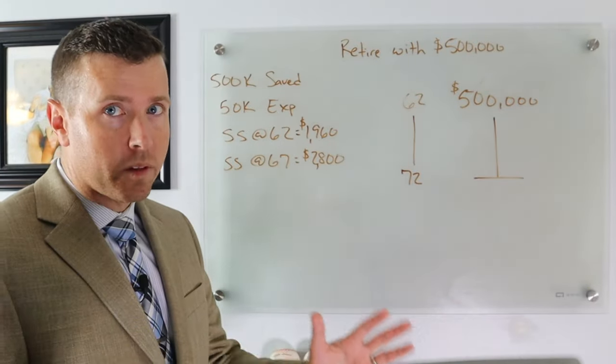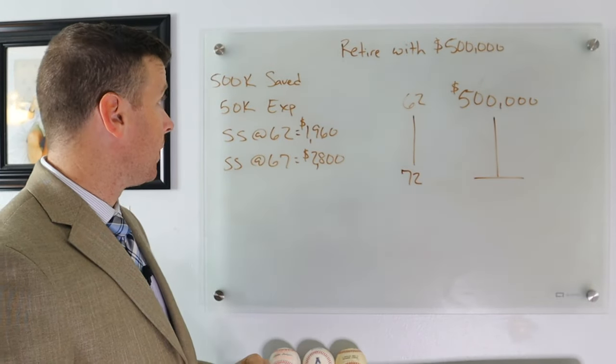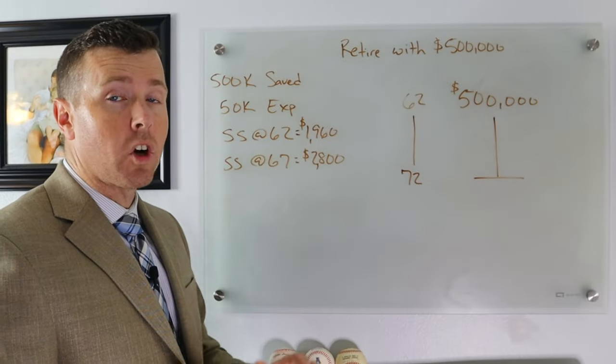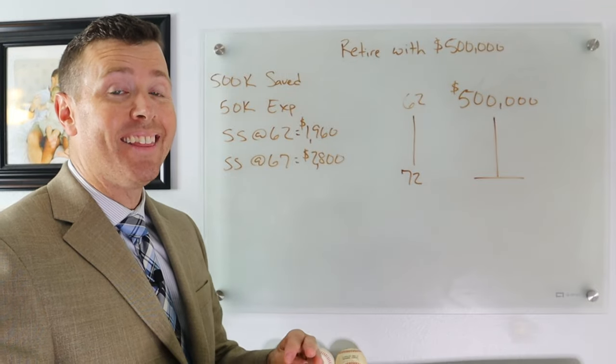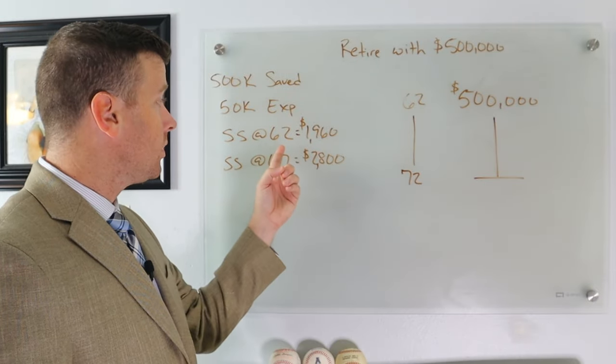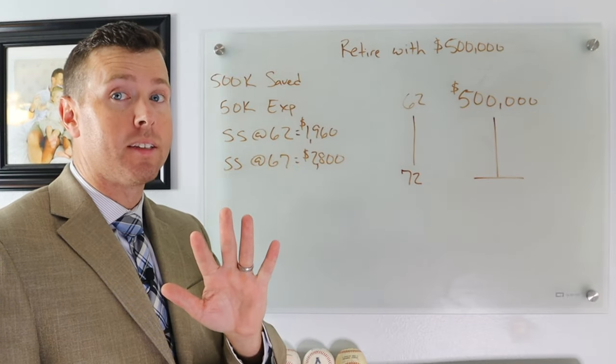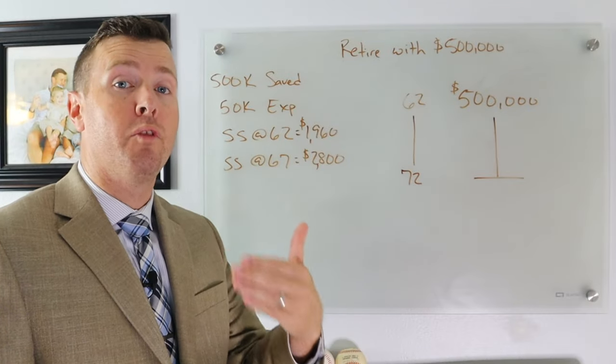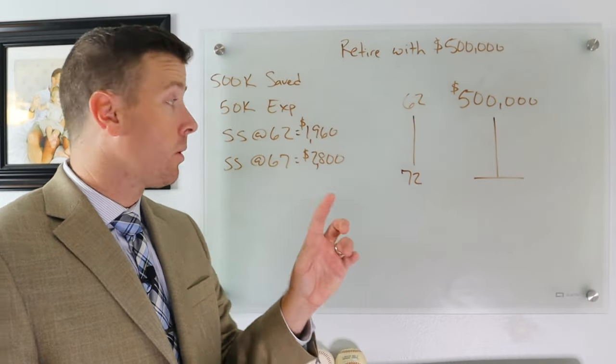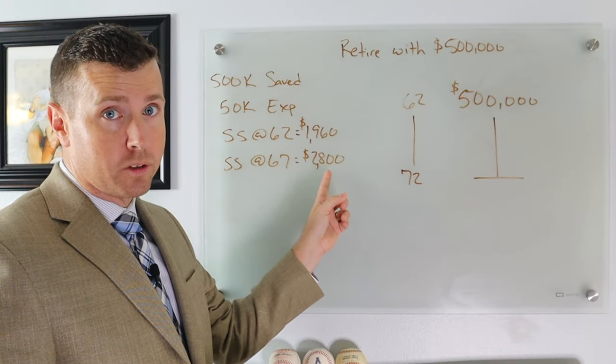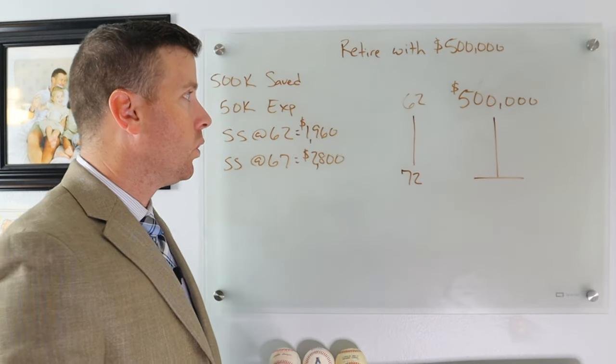Let's go over the fundamentals again. We've got $500,000 saved for retirement. $50,000 is our annual expenses - that's the average annual expenses for someone in their 60s who's retired. Social Security at 62 is going to be $1,960. That's 70% of our full retirement benefit. It's a 30% decrease from our number at 67, which is $2,800 a month.